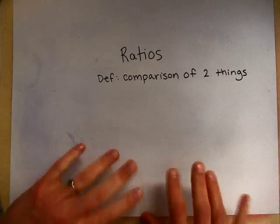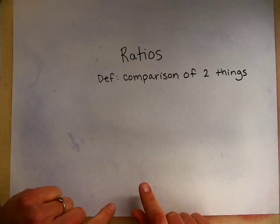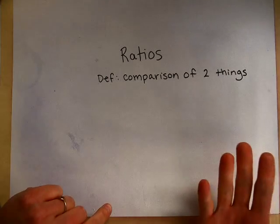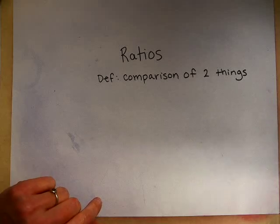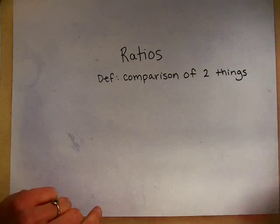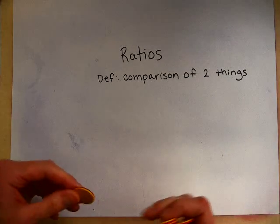A ratio is like, if you think about the classroom, you could say something like we have 12 boys for every 10 girls. And so that's two things—boys and girls—that you're comparing: 12 boys to 10 girls.